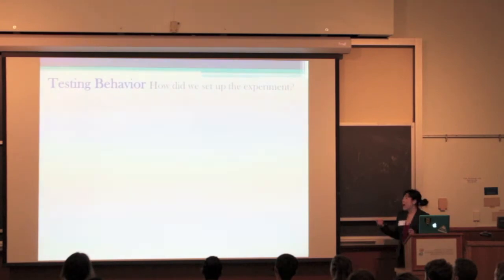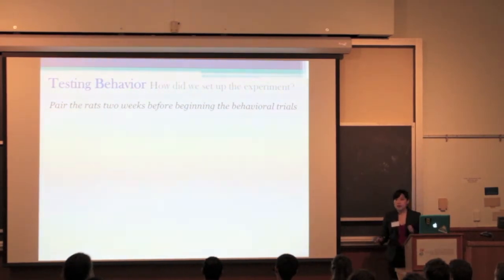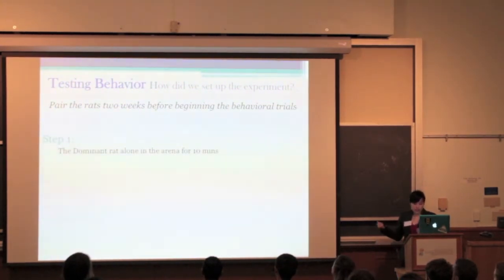Testing behavior. How do we set up the experiment? First things first, we paired the rats for two weeks before beginning the behavioral trials. This allowed them to get comfortable with one another and establish dominancy, which is a natural behavior in rats. The first thing is, we put the dominant rat, or the one that's more exploratory, bold, and more likely to try to free its cage mate, into the arena alone for ten minutes. That way, it has plenty of time to explore and, you know, just check out the area and get used to it.